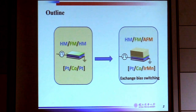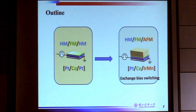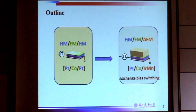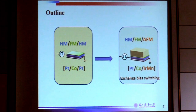We have been working on antiferromagnetic spintronics, but one of the challenges is to understand how the spin structure looks in the antiferromagnet. I hope that by using this kind of exchange bias, we can obtain more information about the interfacial spins at the interface, especially when talking about the Pt and Co and IrMn magnet system.